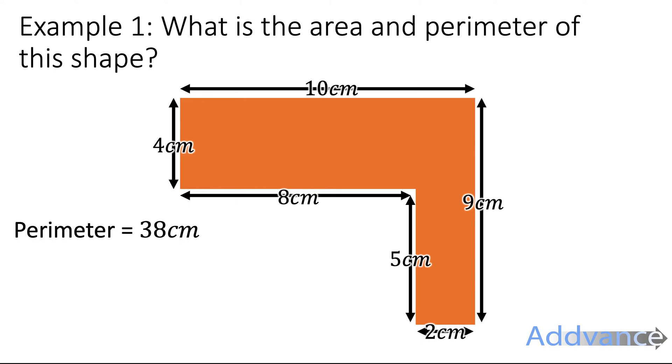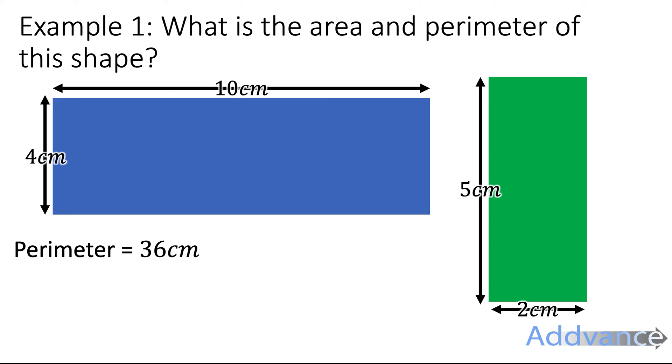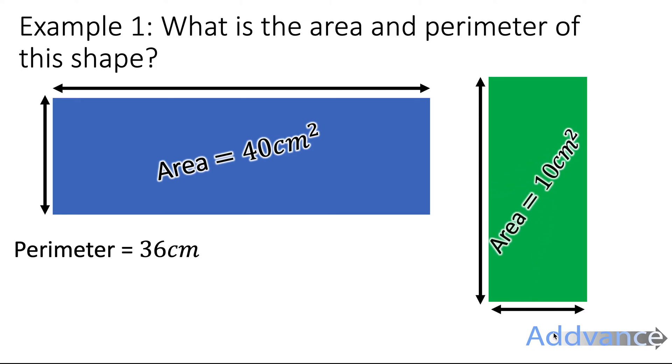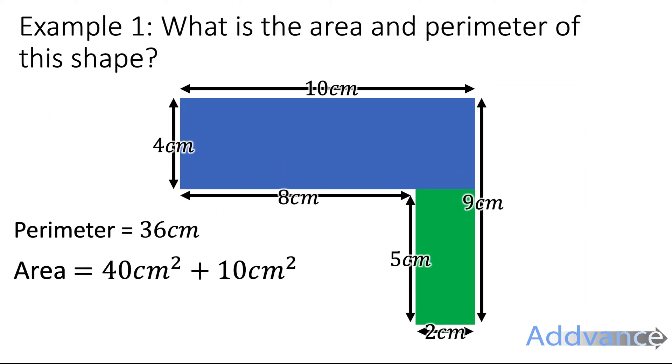We know the perimeter, now let's work out the area. We're going to split this into two rectangles and work out the area of each rectangle separately. This blue rectangle is 4 by 10, multiply and we get 40 centimeters squared. The green one is 5 by 2, multiply and we get 10 centimeters squared. We know the two separate areas, now we can add them together to find the total area. 40 plus 10 is 50 centimeters squared. And so the area of this shape is 50 centimeters squared, the perimeter is 36. We have finished.